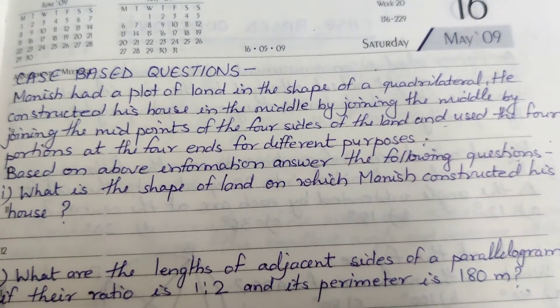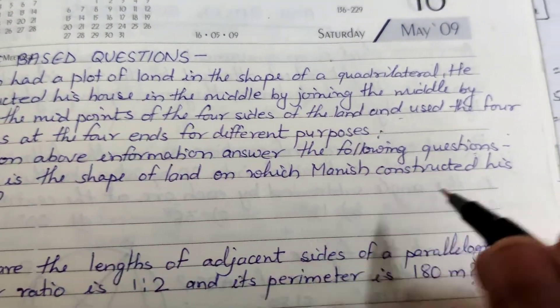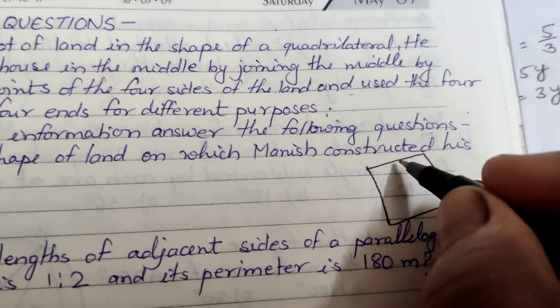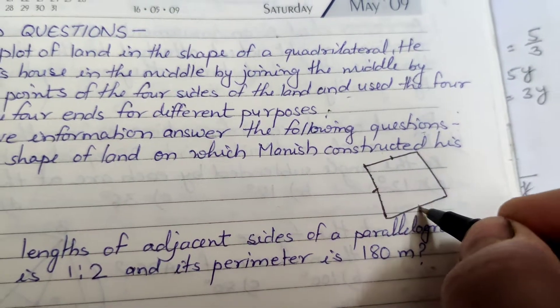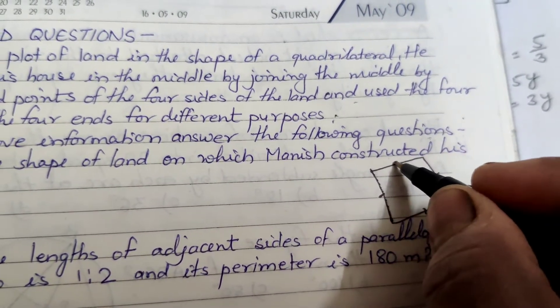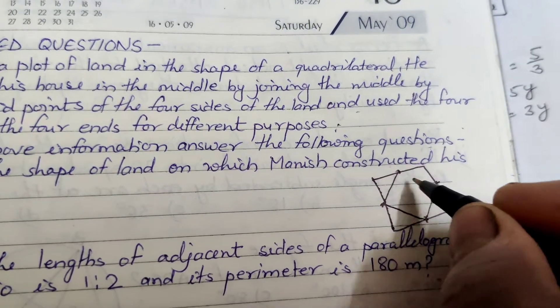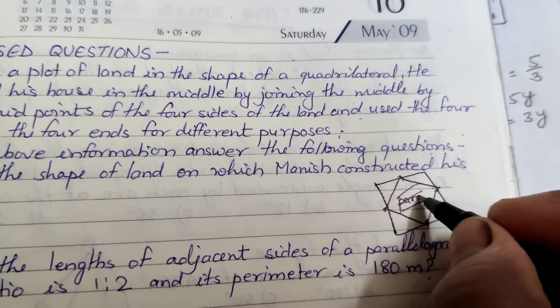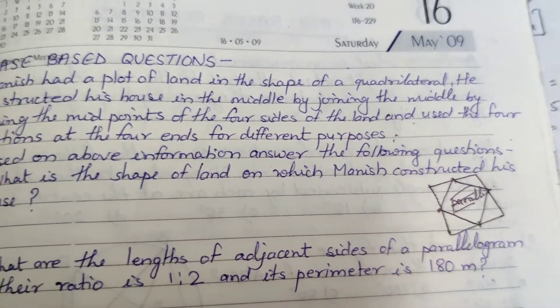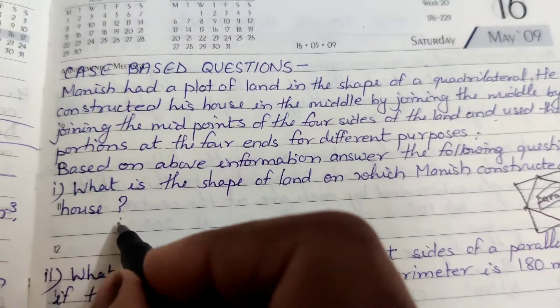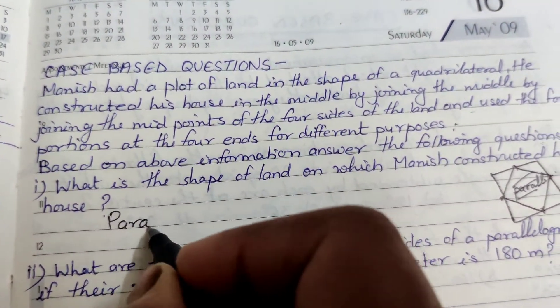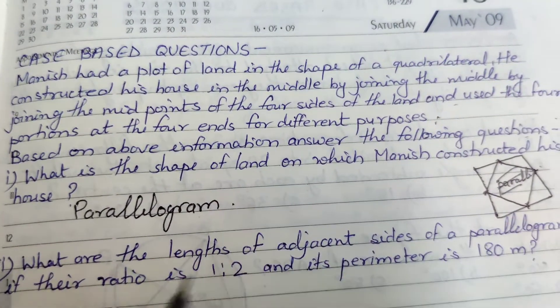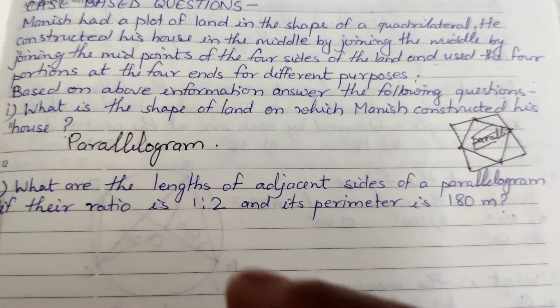What is the shape of land on which Manish constructed his house? He has a quadrilateral shape of land. He made the house by joining the midpoints of the quadrilateral. This portion is a parallelogram. Joining the midpoints forms a parallelogram. So what is the shape of land? You can get a parallelogram.